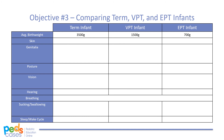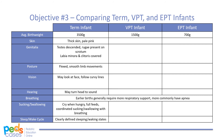Term infants often have thick skin and appear pale pink. Genitalia are developed and movements are flexed and smooth. Term infants may look at faces and follow curvy lines, and may turn their head and eyes to sound. Term infants can cry when hungry and can coordinate breathing, sucking, and swallowing. They also typically have defined sleeping and waking states.